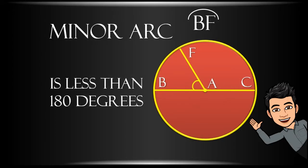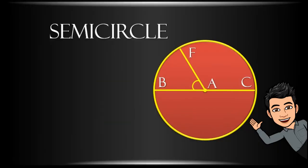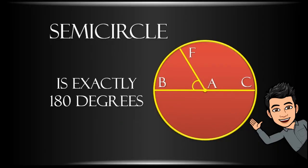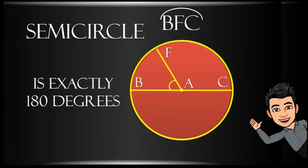A semicircle - it measures exactly 180 degrees. BFC is an arc of circle A.